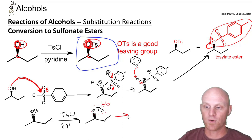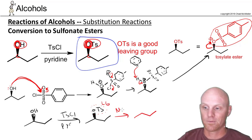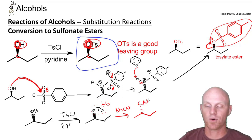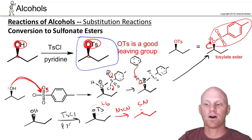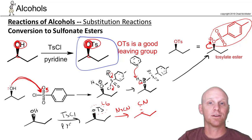Now if I want to do an SN2 reaction, I might add NaCN, which would cause inversion of configuration and replace the OTs group with a cyanide group. The whole point in converting the alcohol into an OTs is that now I've got a good leaving group and I can do substitution — or maybe elimination.